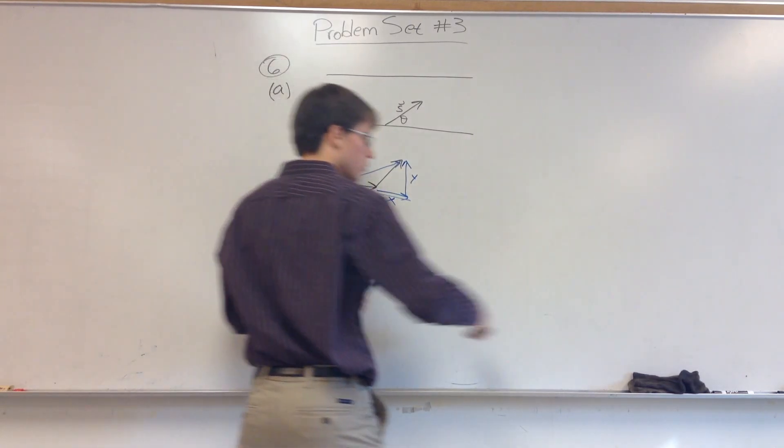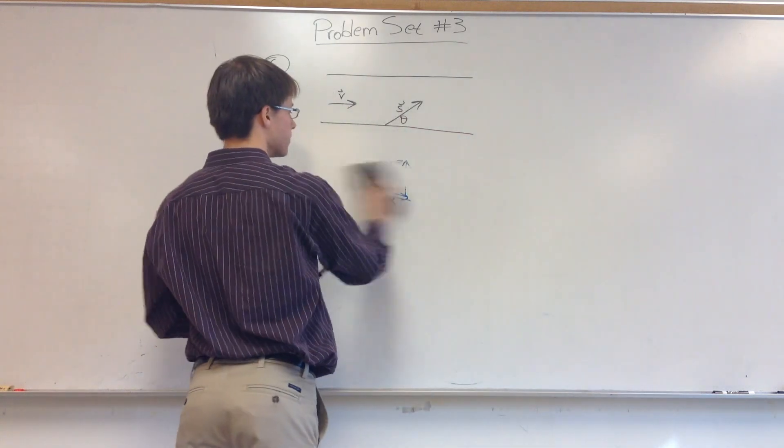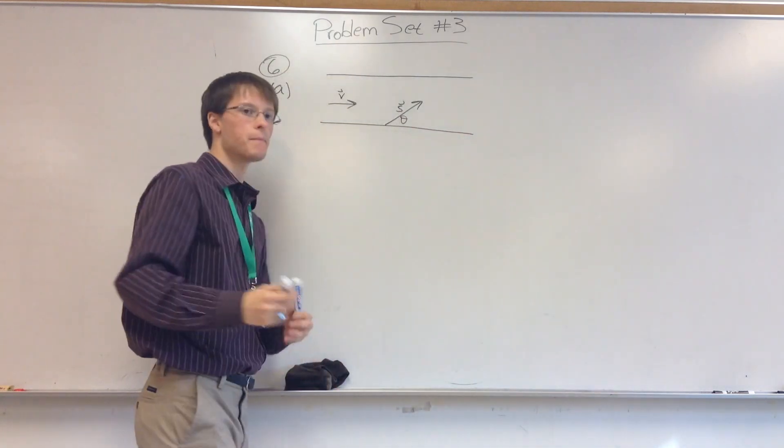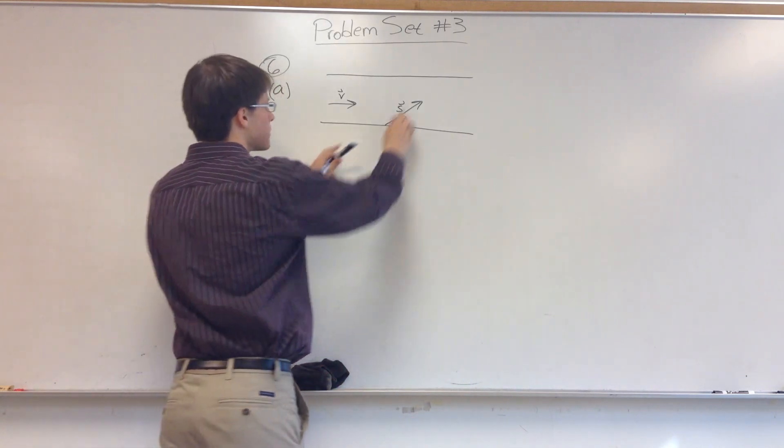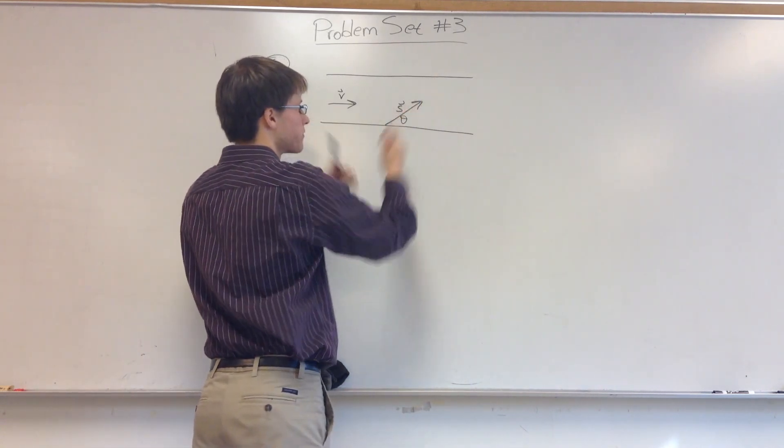So if I want to know what's the quickest way to cross the river, I want to do it such that it maximizes the y component of the swimmer's velocity. So when it's like this, let's say this is like 45 degrees,